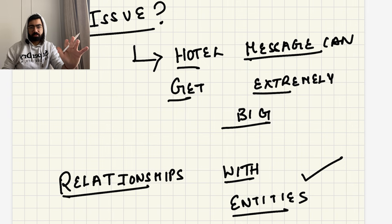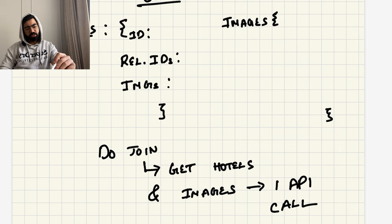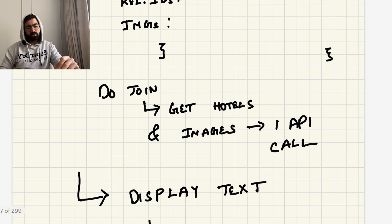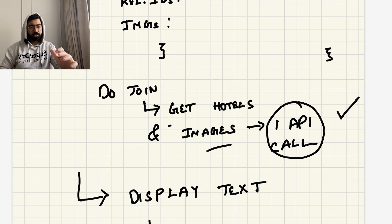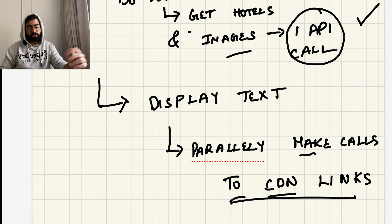The rule for choosing SQL vs NoSQL is: if there are relationships between data, prefer SQL. If there are no relationships, you can still choose SQL, but then consider whether your write load or read load is more dominant. If write load is more, NoSQL is generally preferred; if read load is more, SQL is preferred. With SQL, you have a hotels relation with ID, related IDs, and images — you can do a join in a single API call, getting all related hotels and their images, reducing all round-trip delay.